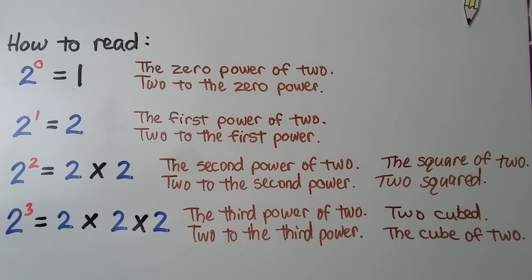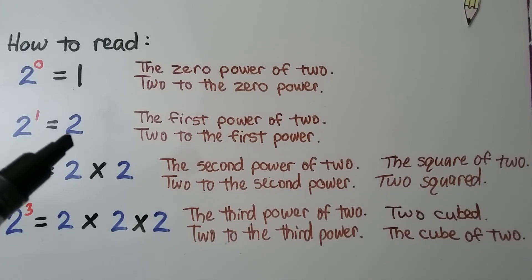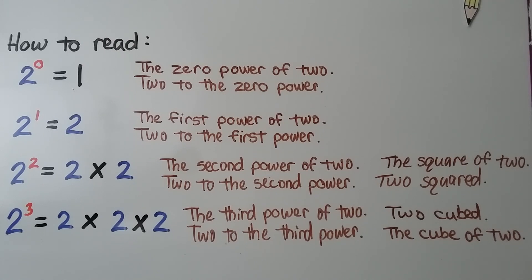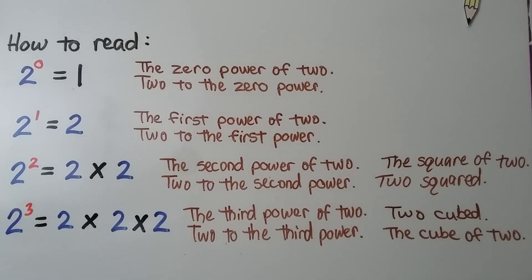When we have a 2 with a zero exponent, it's equal to 1 — we read it as 2 to the zero power. When we have a 2 with a 1 exponent, it's equal to 1 factor of 2, so it's just 2 — read as 2 to the 1st power. When the 2 has a 2 exponent, we have 2 factors of 2: 2 times 2, that's equal to 4. That's the 2nd power of 2 — also called the square of 2 or 2 squared, and I'll explain that in a second.